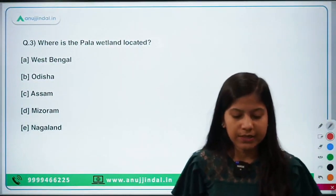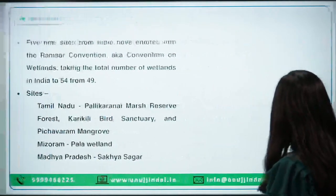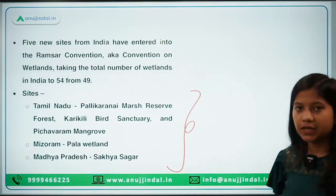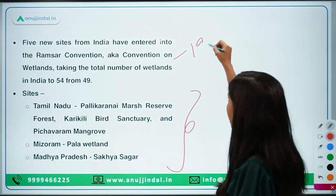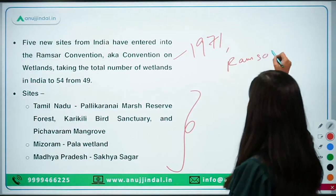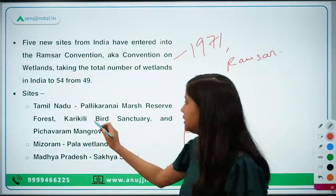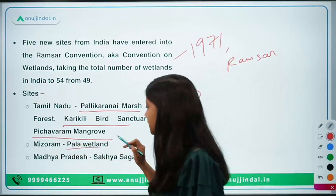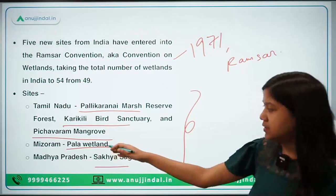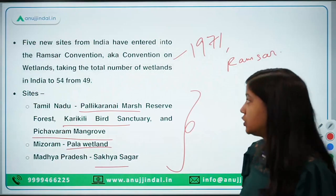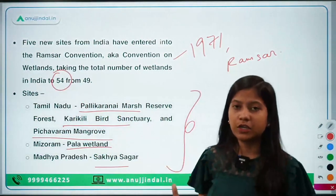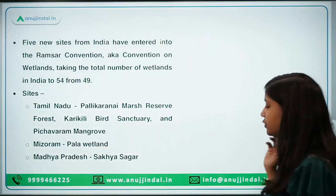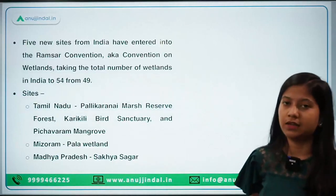The next question: where is the Pala Wetland located? It is located in Mizoram. Recently five wetlands have been added to the Ramsar Convention — the convention on wetlands adopted in 1971 in Ramsar, Iran. The five new wetlands are: Pallikaranai Marsh Reserve, Karikili Bird Sanctuary, and Pichavaram Mangrove from Tamil Nadu; Pala Wetland from Mizoram; and Sakhya Sagar from Madhya Pradesh. The total number of wetlands in India under the Ramsar Convention is now 54, which is the highest in South Asia.